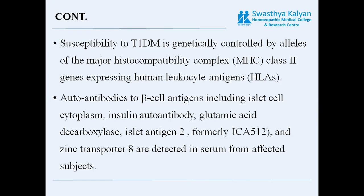Autoantibodies to beta cell antigens — including islet cell cytoplasm, insulin autoantibody, glutamic acid decarboxylase, islet antigen 2, and zinc transporter 8 — are detected in the serum.